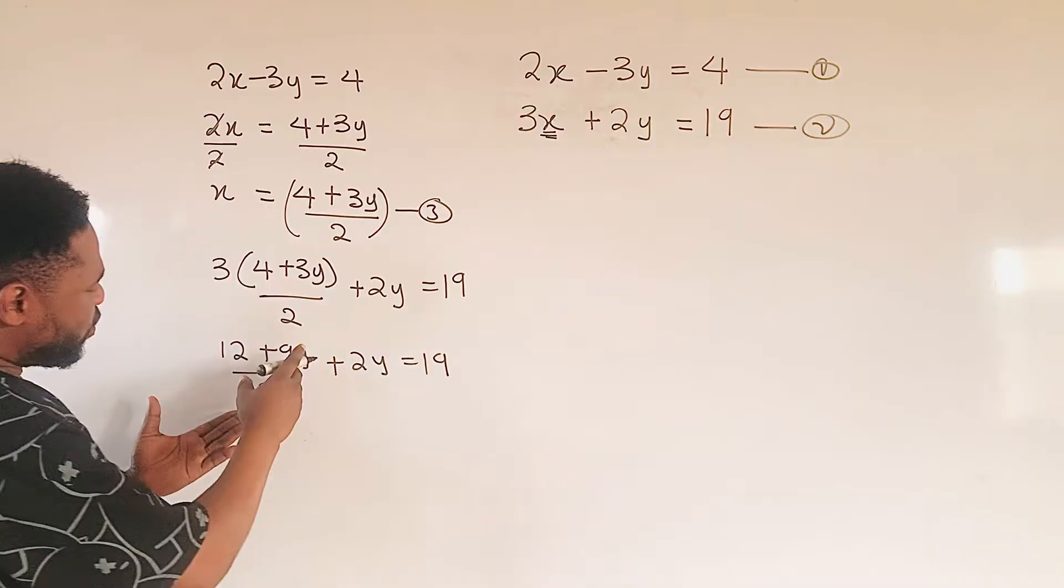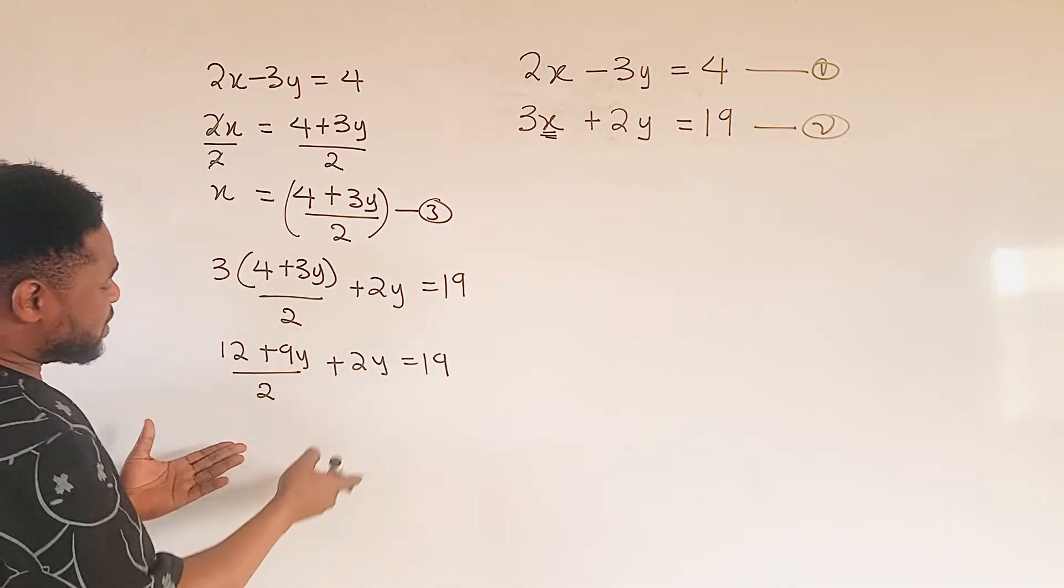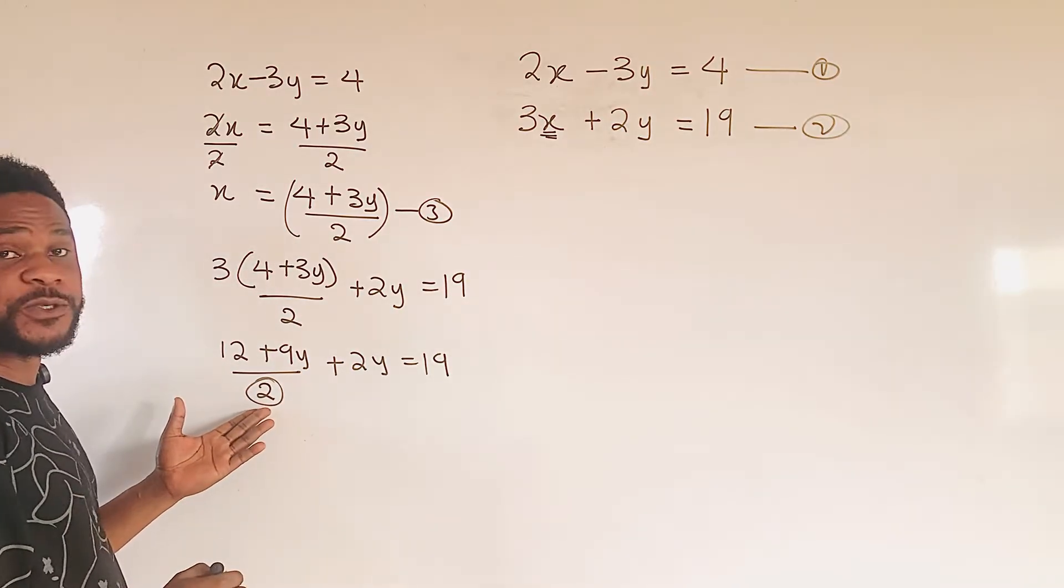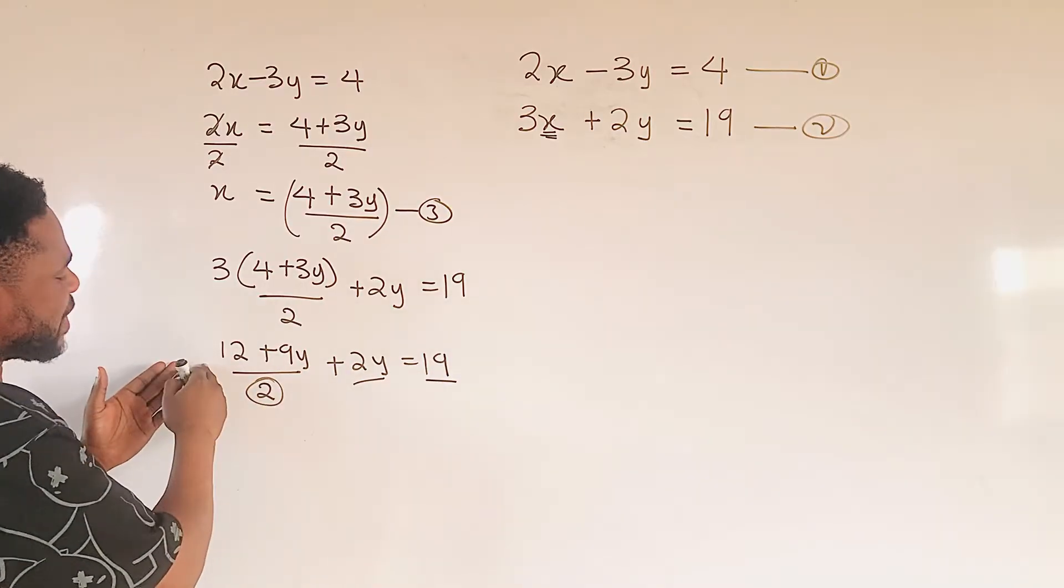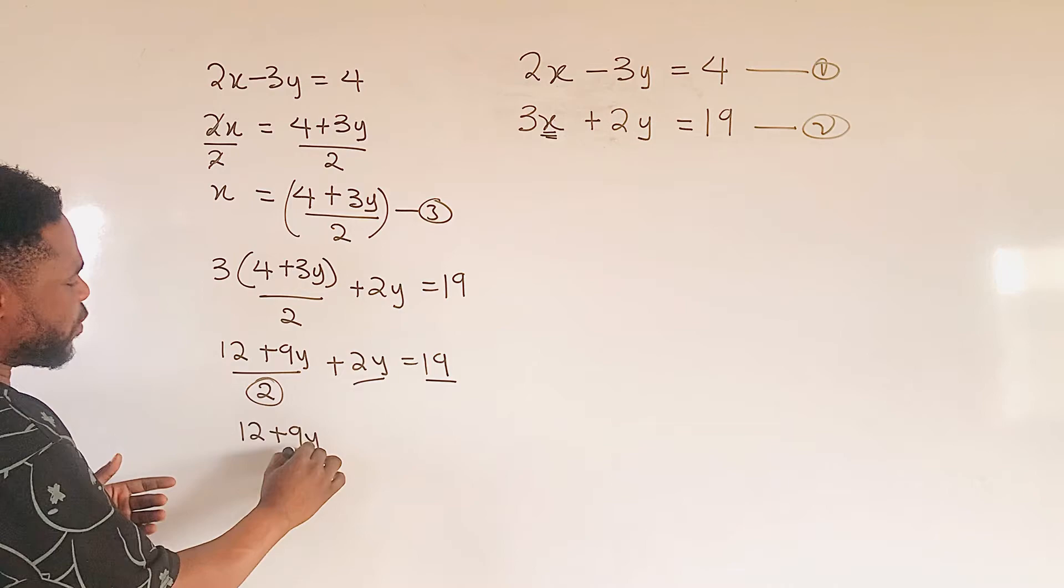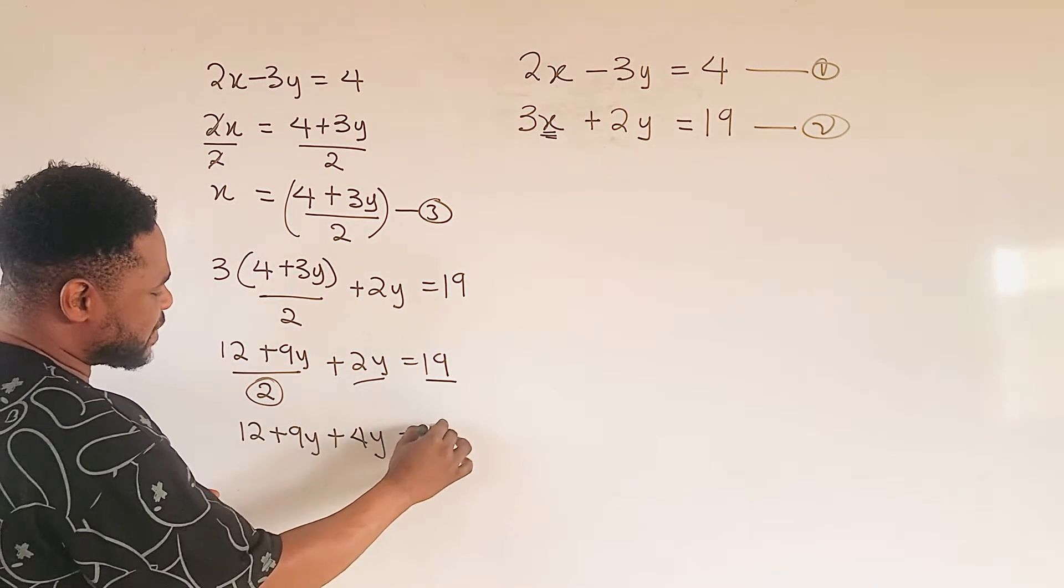At this level, we simplify or we get rid of the fraction in this equation, where we find LCM, and LCM is 2, which we multiply this, multiply this, and cancel out here. Therefore, we have 12 plus 9y, plus 4y, equal to 38.